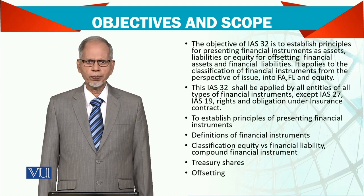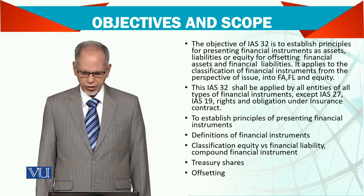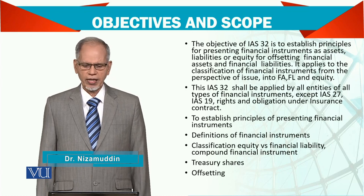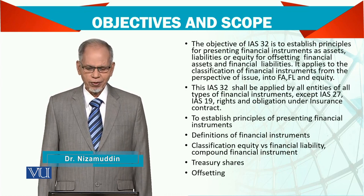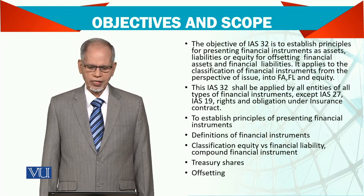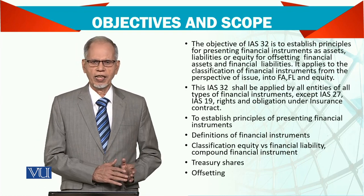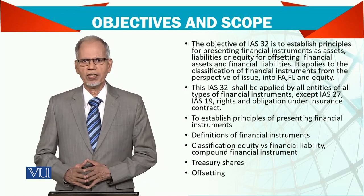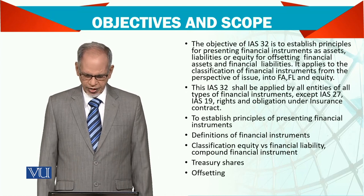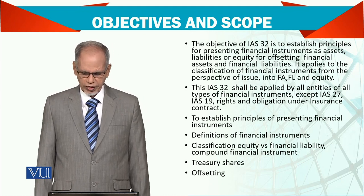Now the objective and scope. The objective of IAS 32 is to establish principles for presenting financial instruments as assets, liabilities, or equity. For offsetting financial assets and financial liabilities — it happens that you have financial assets and at the same time you have a financial liability, so you can offset it. It applies to the classification of financial instruments for the prospects of issue of financial assets.